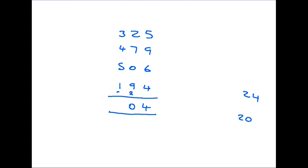3 plus 4 is 7 plus 5 is 12 plus 1 is 13 plus the 2 is 15. And again we put the 5 in we carry the 1 but there's nothing to add to it. So it goes in as it is 1,504.